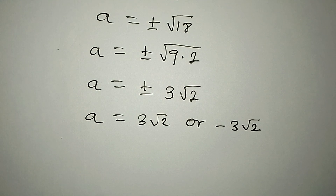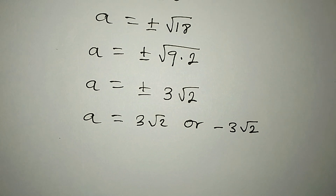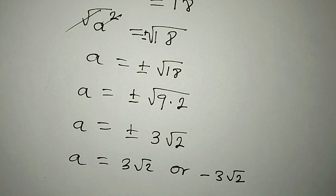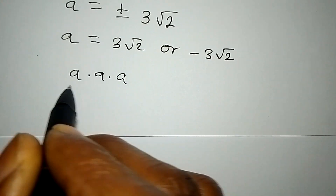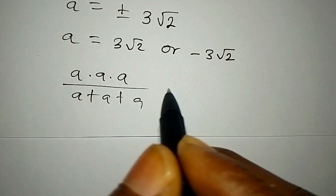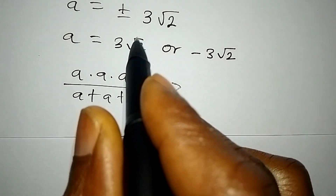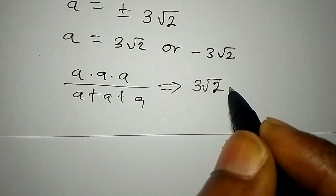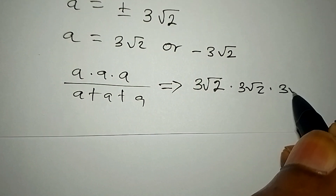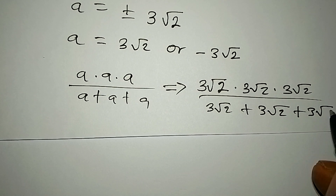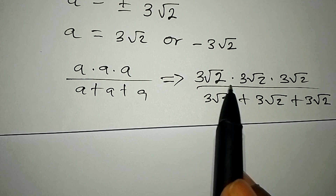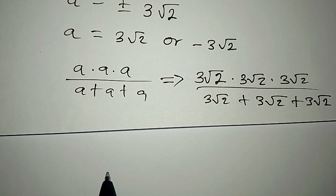Now let's work with the first value of a and see if it satisfies the equation. The original equation is a × a × a over a + a + a. Substituting a = 3√2, we have 3√2 multiplied by 3√2 multiplied by 3√2, all over 3√2 plus 3√2 plus 3√2. Multiplying 3 × 3 × 3 gives us 27.